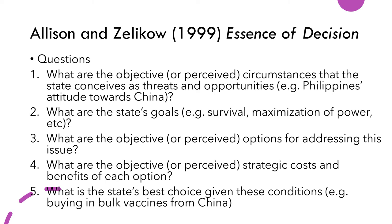There was also the question when Duterte decided to pardon Pemberton, a murderer, and deport him to the U.S. The second question is: what are the state's goals? Goals could also mean potential benefits. Third: what are the objective or perceived options for addressing the issue? Fourth: what are the objective or perceived strategic costs and benefits of each option? And fifth: what is the state's best choice given these conditions? Best choice is the choice after the rationalization of self-interest and maximum utility.